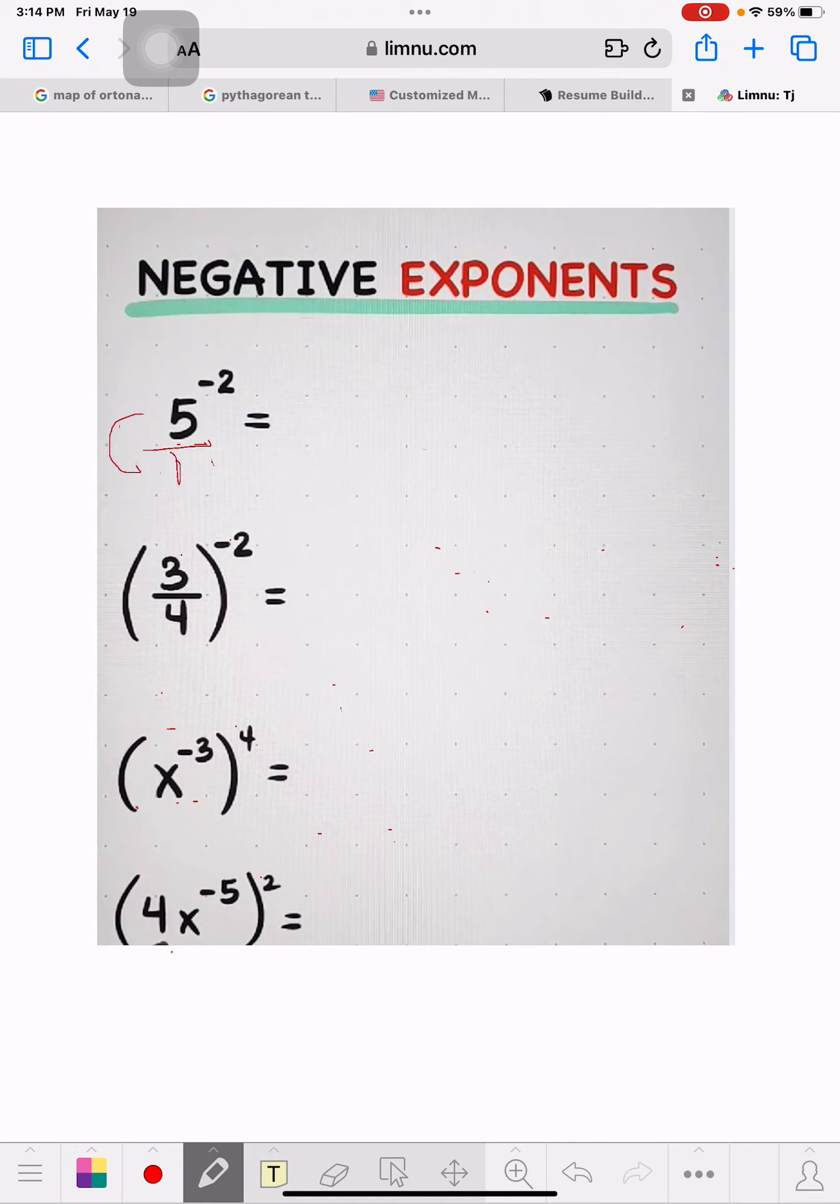The 5 just reverts down to the bottom, so it becomes 1 over 5. And then it's square. So that equals 1 over 5 times 5. 5 times 5 equals 1 over 25. And that's the answer.